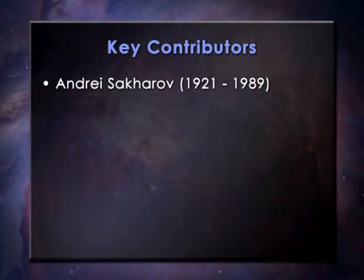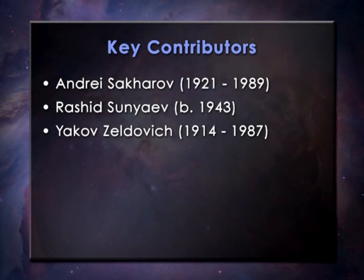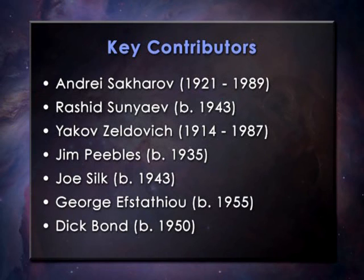Having said how simple the young universe is, it still took almost 30 years — from the 1970s to the 1990s — for theoretical cosmologists to construct a detailed treatment of the hot, expanding gas laced with slight fluctuations. Some of the key contributors were Andrei Sakharov, the famous dissident, Rashid Sunyaev and Yakov Zeldovich in the former Soviet Union, and Jim Peebles, Joe Silk, George Efstathiou and Dick Bond in the US, UK and Canada, though many others were also involved.